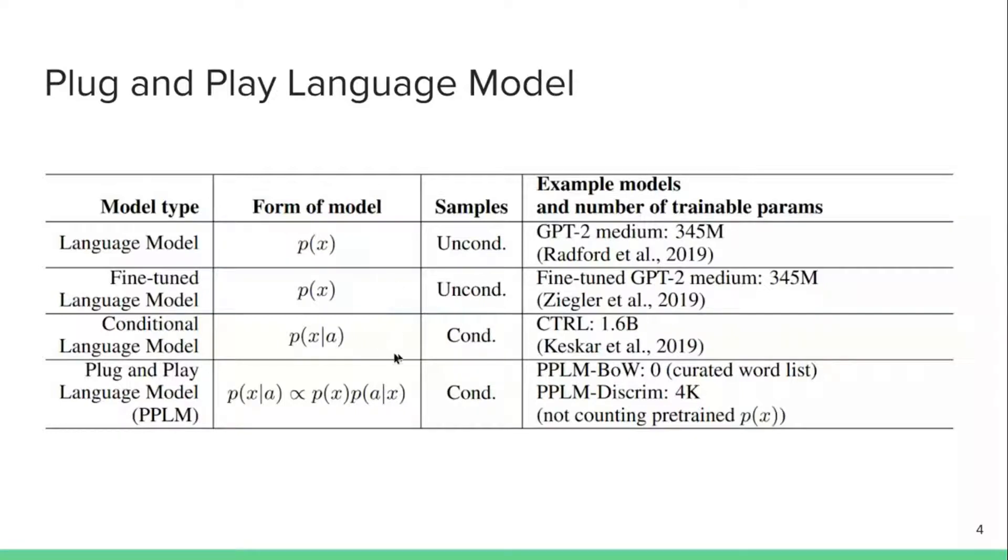Another approach is reported in this CTRL paper, where you have a conditional language model, meaning you're modeling the probability of generating a text x given some attribute a. This attribute is typically, I think in this paper what they're doing is they're taking a lot of text and they're labeling the text with different attributes, different classes, and then they are conditioning on those classes and training the models to generate text given a class.